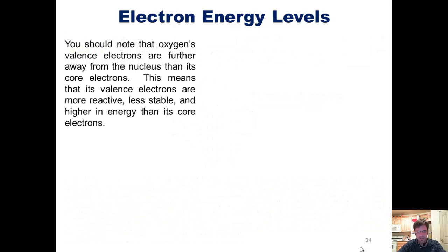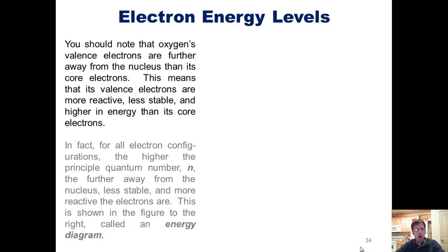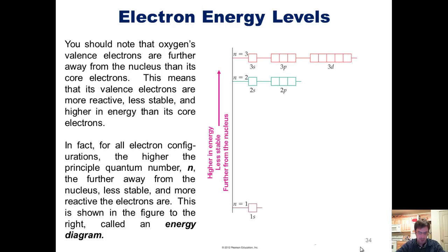Now you should know that oxygen's valence electrons are further away from its nucleus than its core electrons. This means that its valence electrons are more reactive, less stable, and higher in energy than its core electrons. In fact, for all electron configurations, the higher the principal quantum number n, the further away from the nucleus, less stable, and more reactive the electrons are. This is shown in the figure to the right, which we call an energy diagram.